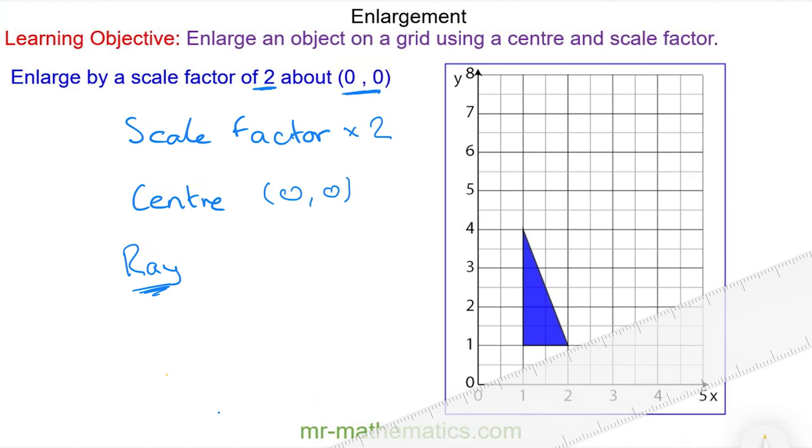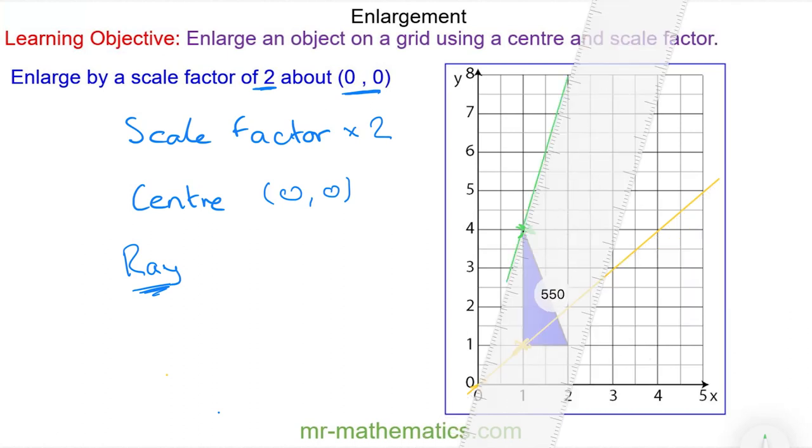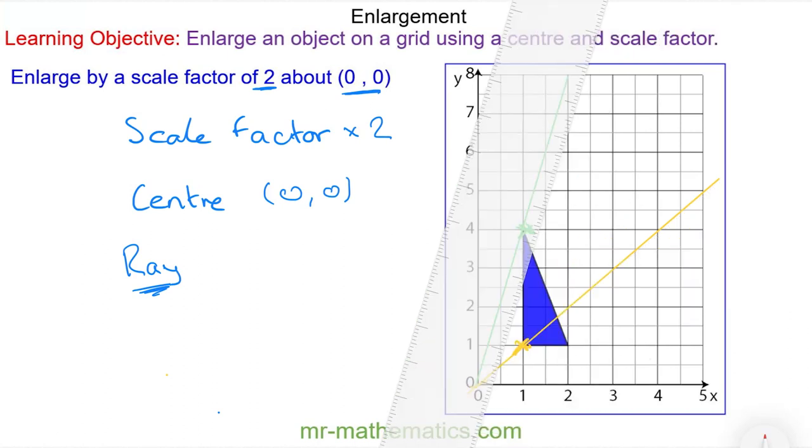So I'm going to use the ruler to align this vertex with the center and then I just draw a line through the center and the vertex and this is a ray. I'll do the same through a different vertex and this is another ray and I'll do the same through the final vertex.